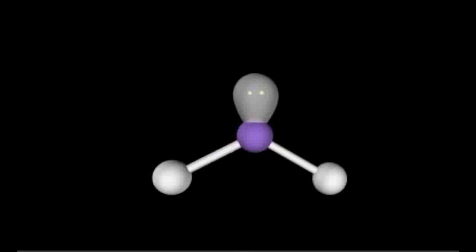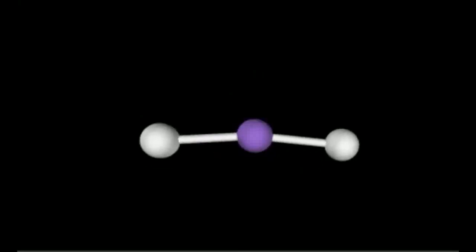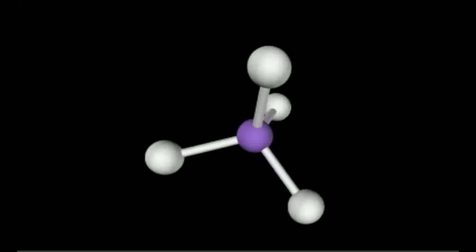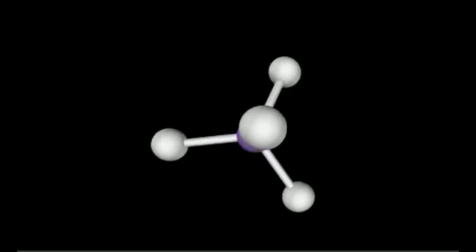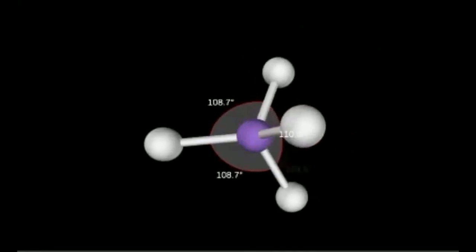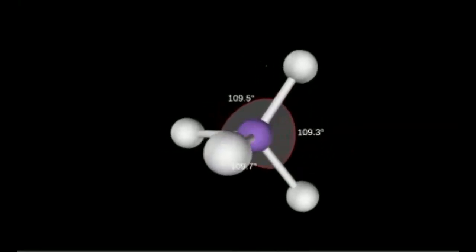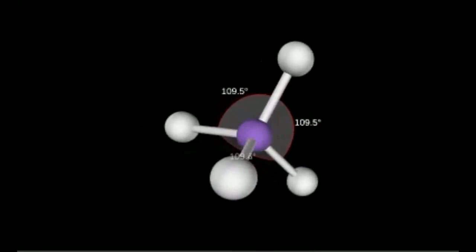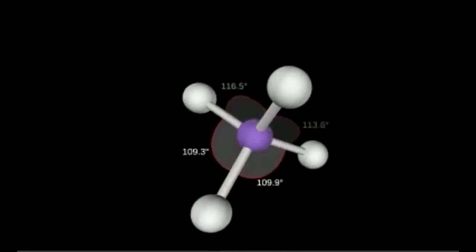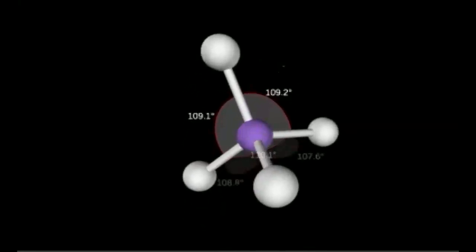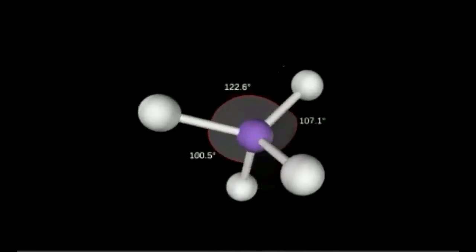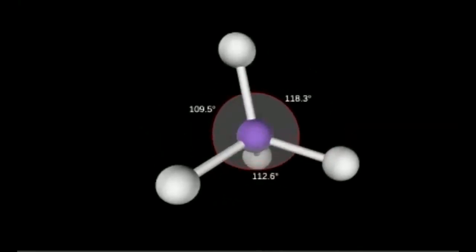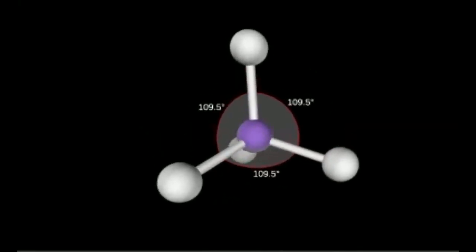If we have AB₄ type, that is tetrahedral. The bond angle between all atoms is 109.5° — you can see this in the 3D model. If we have AB₃E₁, it means 3 bonded atoms and 1 lone electron pair.